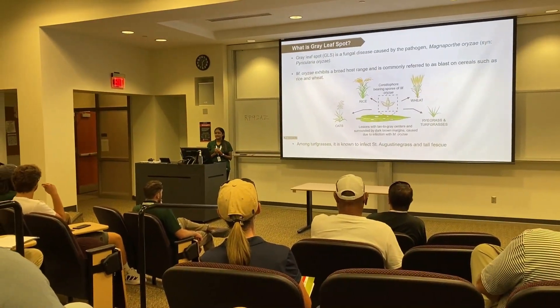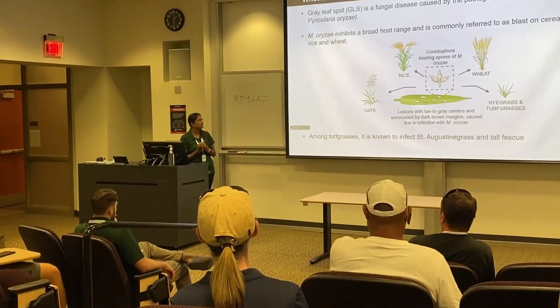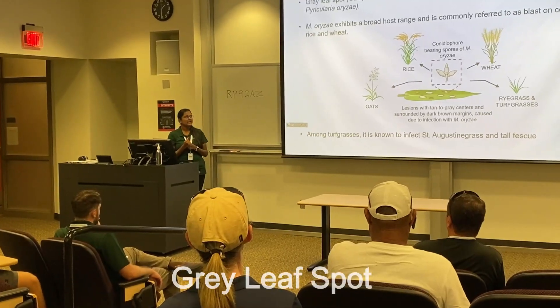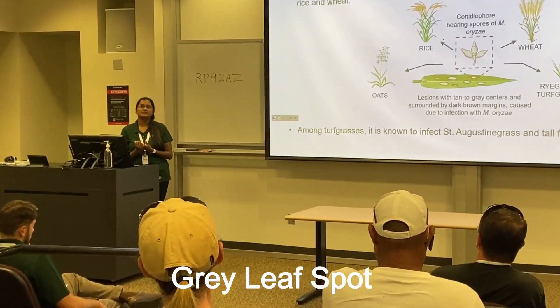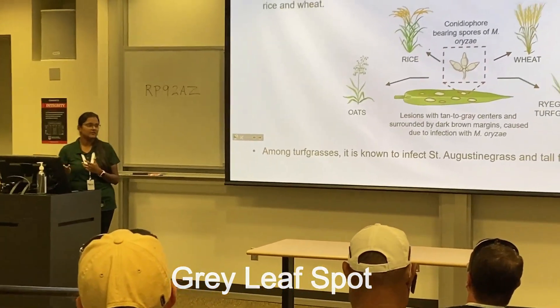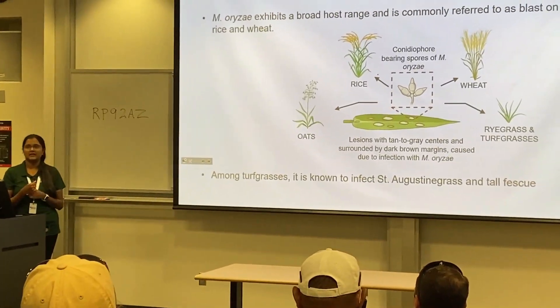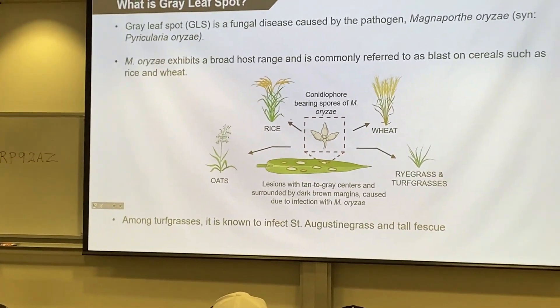The regions show tan to grey centers surrounded by drought-stressed ground margins. This pathogen produces spores, so it can spread rapidly and destroy all the plants in the vicinity.